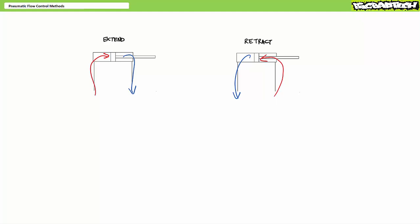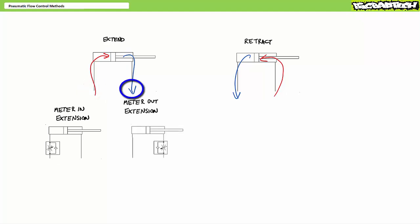This allows us two opportunities to control extension and two opportunities to control retraction. To control extension, we could restrict flow coming into the cap end — the slower the cap end fills up, the slower the cylinder will extend. This is known as meter in extension. Alternatively, we could restrict flow coming out of the rod end — the slower the rod end drains, the slower the cylinder will extend. This is known as meter out extension.